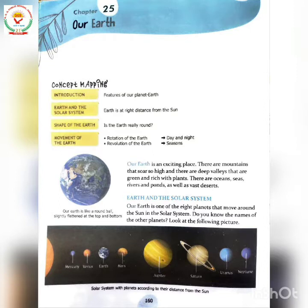Earth and the Solar System — our Earth is one of the eight planets that move around the sun in the solar system. Do you know the names of the other planets? Look at the following pictures: Mercury, Venus, Earth, Mars, Jupiter, Saturn, Uranus, Neptune.